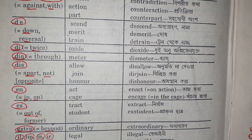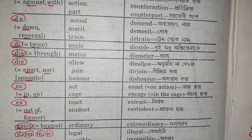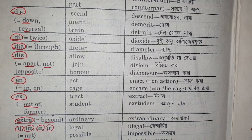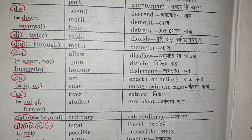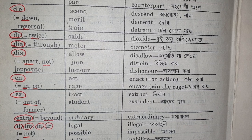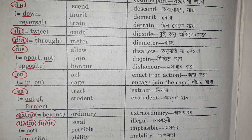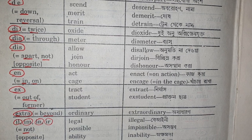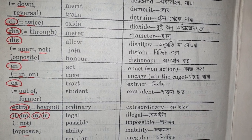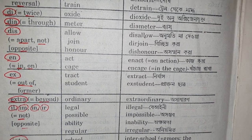Di with the meaning of twice — oxide, dioxide. Dia with the meaning of through — meter, diameter. Dis with the meaning of apart or not, which will give the opposite sense — allow, disallow; join, disjoin. En with the meaning of in or on — act, enact.